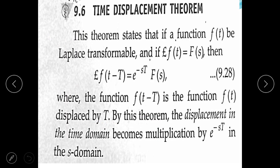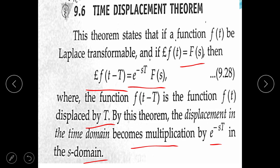Next is the time displacement theorem. According to this theorem, if f(t) is Laplace transformable and the Laplace transform of f(t) is F(s), then the Laplace transform of f(t − T) is e^(−sT)·F(s). The function f(t − T) is the function f(t) displaced by T. By this theorem, displacement in time domain becomes multiplication by e^(−sT) in the s domain. This is the statement of the time displacement theorem.